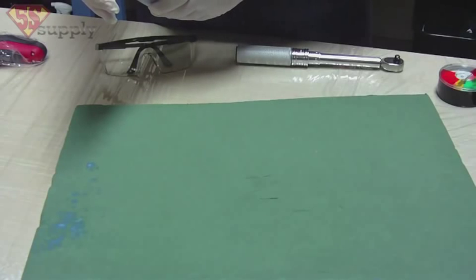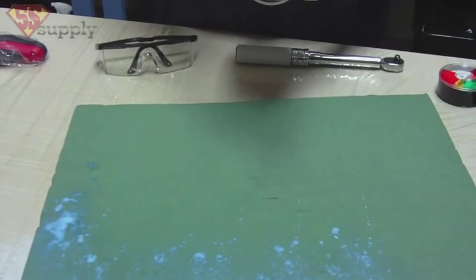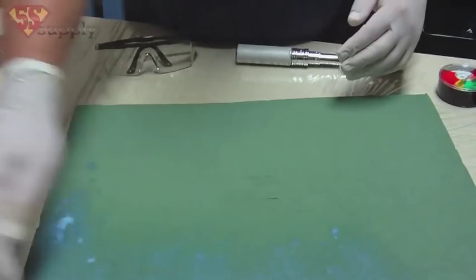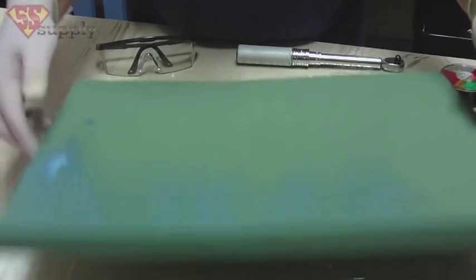I recommend starting with the back of the sheet first. Go ahead and spray the back of the impression material with the molding spray in an overlapping pattern. Don't forget to spray the sides of the molding material, but leave a spot open for your fingers so that you can flip it over.